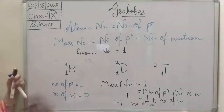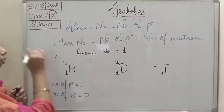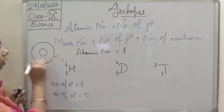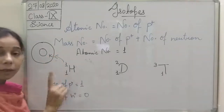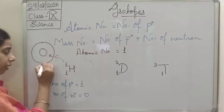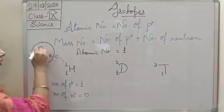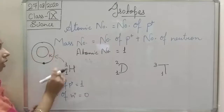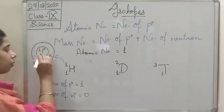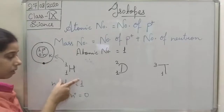We can draw the atomic diagram of hydrogen. This is the K shell. The atomic number is 1, meaning number of protons as well as number of electrons is 1. So only 1 electron will be in the K shell. In the nucleus, there is 1 proton and 0 neutrons. So 0 plus 1 equals 1, giving mass number 1.